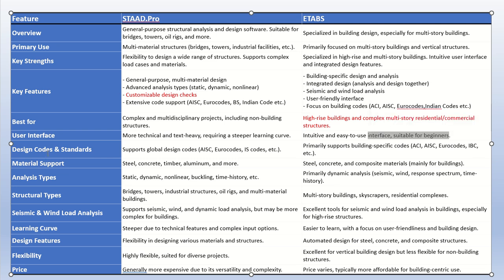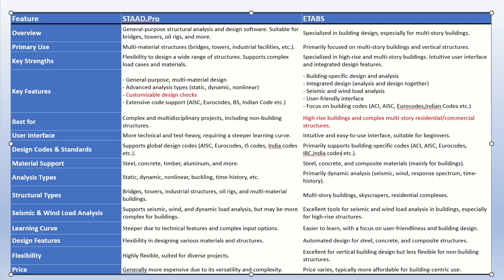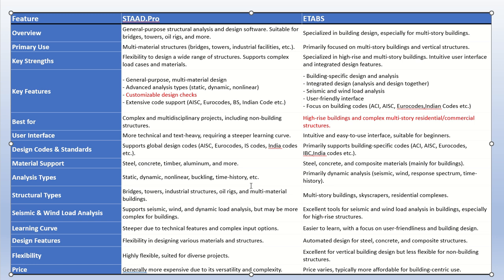Both softwares support all design codes, including Indian codes. Both STAAD Pro and ETABS support all kinds of materials with properties like elastic modulus and every other parameter. For analysis types: STAAD Pro performs static analysis, dynamic analysis, nonlinear, buckling, and time history analysis. ETABS focuses on primary dynamic analysis — seismic, wind, response spectrum, and time history analysis — but has less coverage of static and general dynamic analysis compared to STAAD Pro.